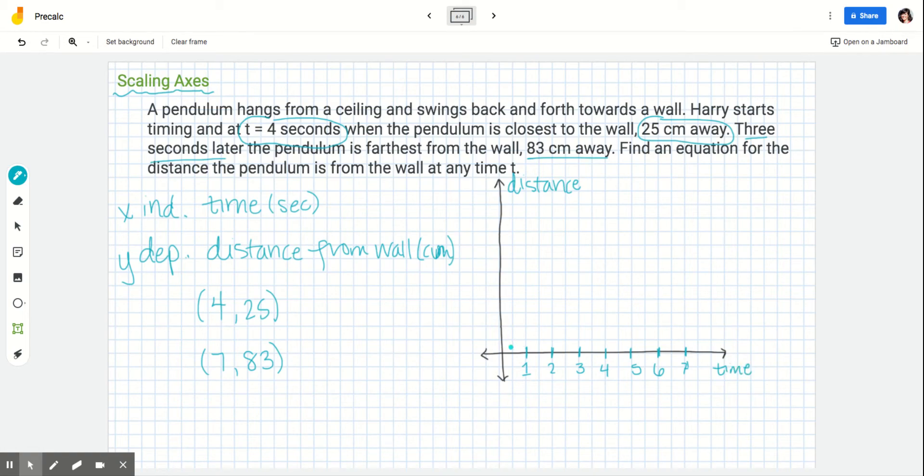But again, the distance between each of these has to be the same. So the distance from 0 to 1 is the same as the distance from 4 to 5.